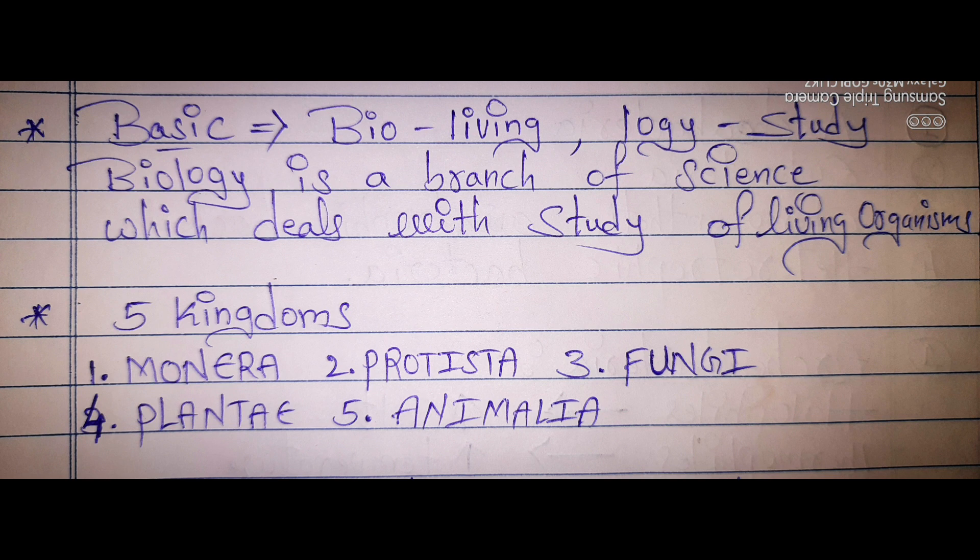There are five kingdoms: Monera, Protista, Fungi, Plantae, and Animalia. Fungi is also known as Mycota. Plantae is also known as Metaphyta. Animalia is also known as Metazoa.